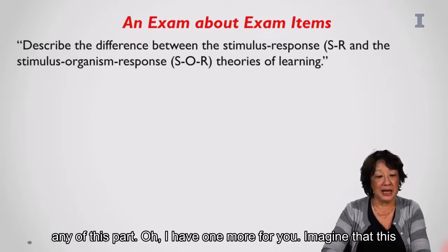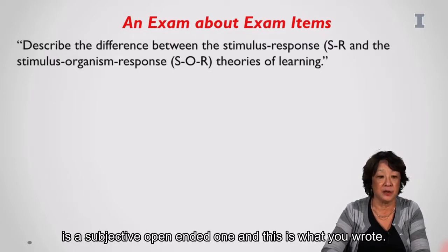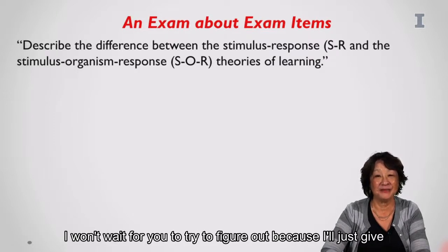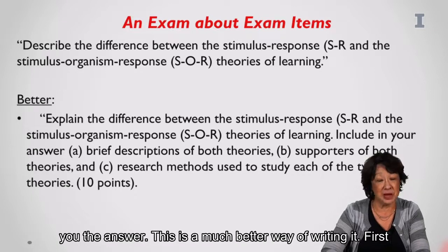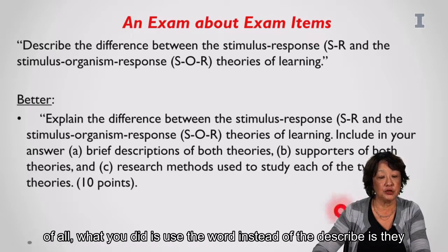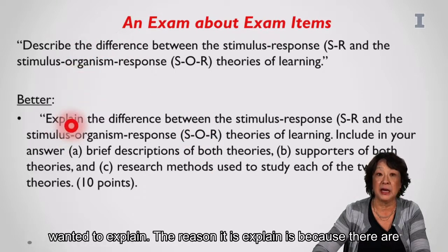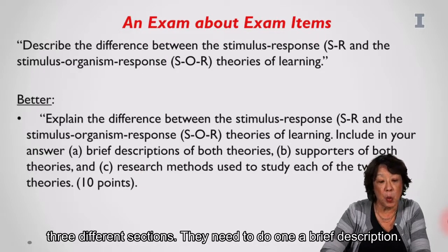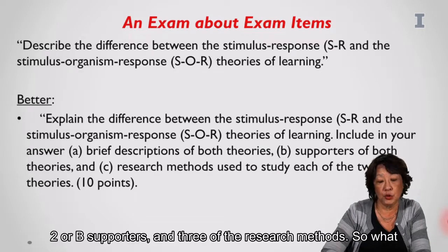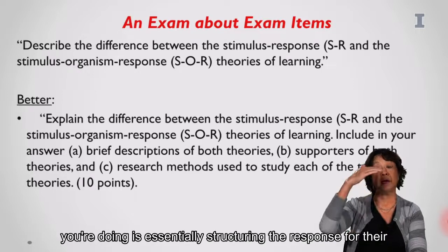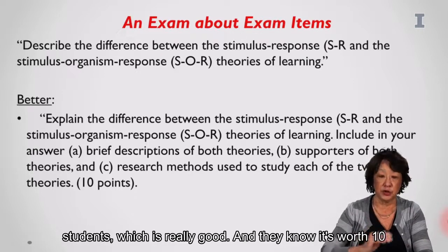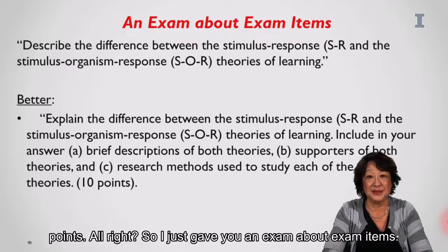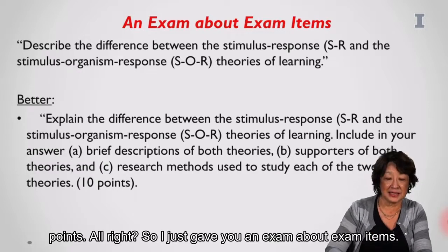Here's one more — imagine this is a subjective, open-ended item. Here's a much better way of writing it. Instead of 'describe,' use 'explain,' because there are three sections the student needs to address: a brief description, the supporters, and the research methods. You are essentially structuring the response for your students, which is really good. And they know it's worth 10 points.